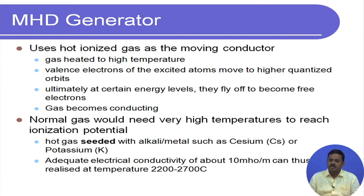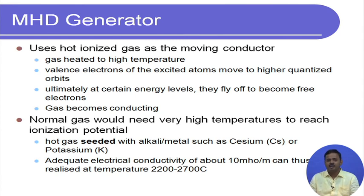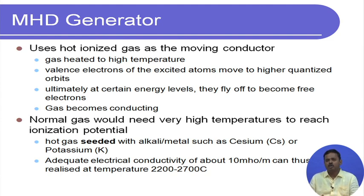A normal gas would require very high temperature to reach its ionization potential, which is not physically attainable. However, if we seed the gas with a small fraction of materials such as cesium or potassium — which are alkaline or metallic — then ionization can take place at lower temperatures of around 3000 degrees Celsius or lower. We can get adequate electrical conductivity of around 10 mho per meter. It has been shown that seeding with a few percent by mass of these alkaline particles achieves appreciable electrical conductivity.